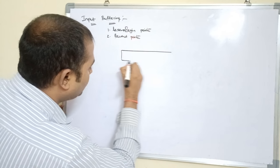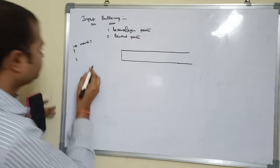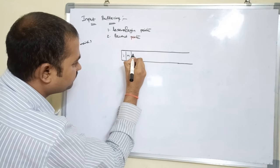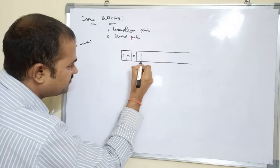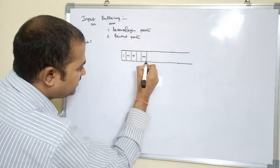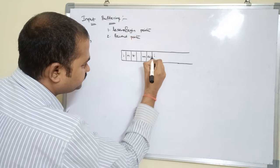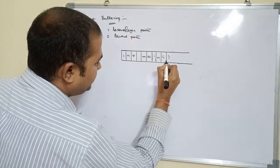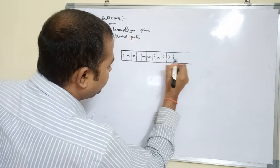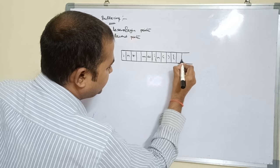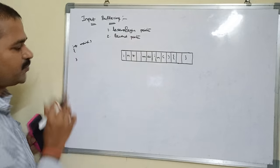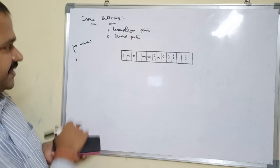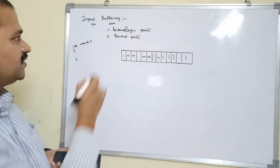Let's see how this program is stored in the hard disk. The first character 'i' is stored, then 'n', then 't', then a blank space, then 'm', 'a', 'i', 'n', then left parenthesis, right parenthesis, then left curly brace, some body/spaces, then right curly brace. This is our input string, stored in the hard disk in this manner.